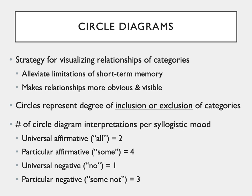Circle diagrams are a strategy for visualizing relationships among categories. Like most visualizations or representations of information, circle diagrams help alleviate the limitations of short-term and working memory, and help make relationships more obvious and more visible. The circles represent the degree of inclusion or exclusion of the categories, and the degree to which circles overlap depicts that inclusion or exclusion. There are a specific number of circle diagrams for each syllogistic mood.